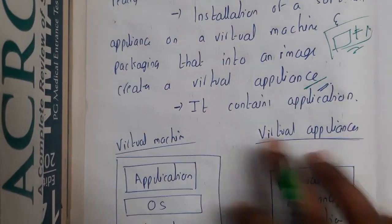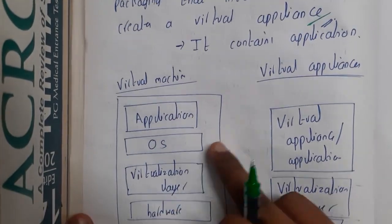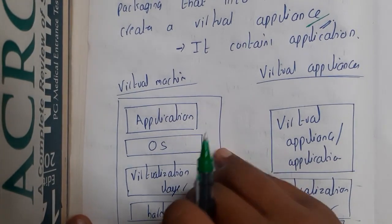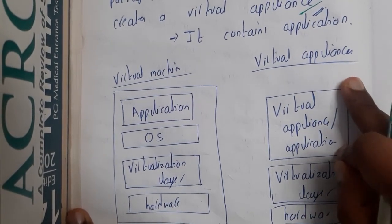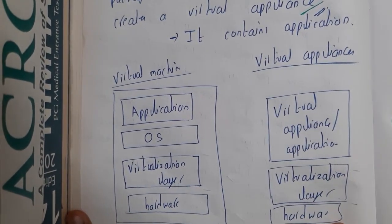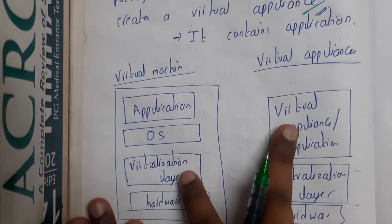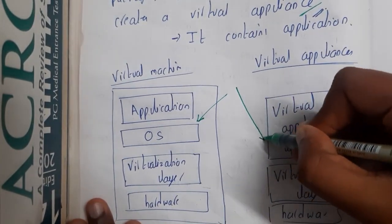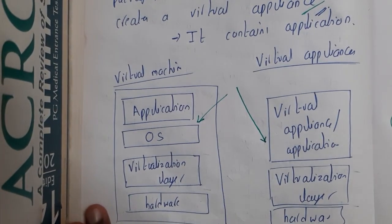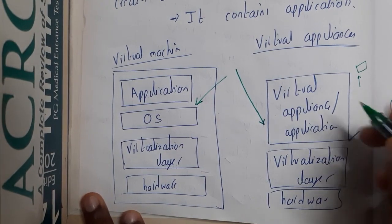A virtual appliance indirectly contains the application. In terms of architecture: a virtual machine contains a hardware virtualized layer, operating system, and application, whereas a virtual appliance contains the application or appliance with a virtualized layer and hardware. The key thing to observe here is that to run a virtual machine you need an operating system, whereas to run a virtual appliance there is no requirement of an additional operating system, because a small version of that operating system already exists within the virtual appliance itself.